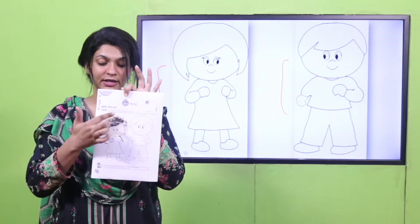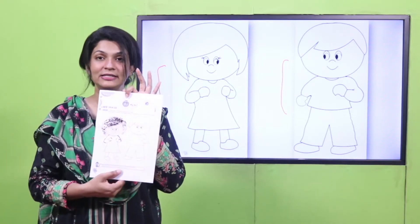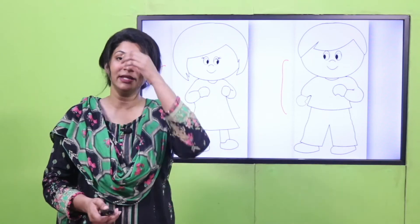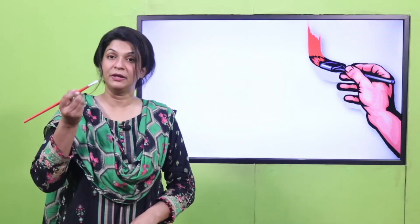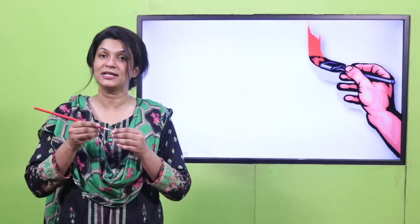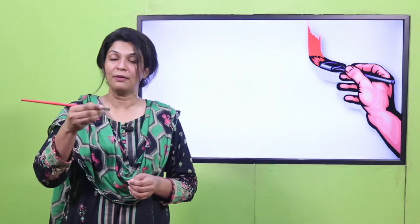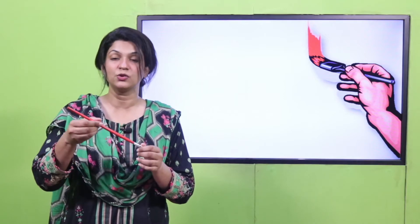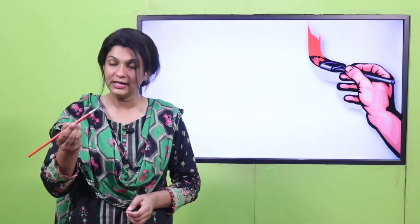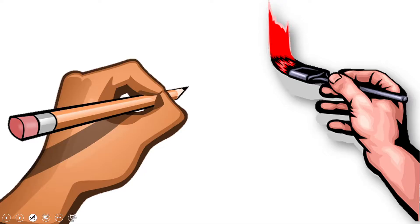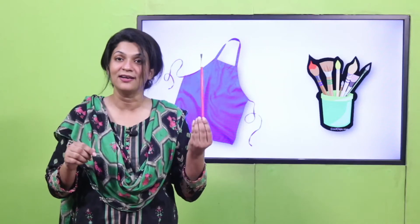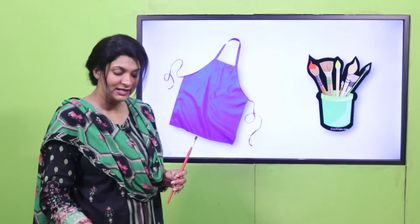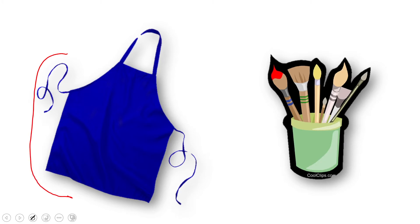لیکن اس سے پہلے یہ بتا دوں کہ آج جو ہم artwork کریں گے اس سے ہماری writing skills اچھی ہونے والی ہیں۔ جب ہم crayon, color pencils یا paint brushes پکڑیں گے تو ہاتھوں کی grip بہت اچھی ہو جائے گی۔ آپ paint brush کو بالکل اسی طرح hold کیجئے جیسے pencil hold کرتے ہیں، لیکن brush کو edge سے نہیں بلکہ تھوڑا اوپر سے پکڑیے۔ آپ کو کئی brushes اور ایک apron کی بھی ضرورت پڑے گی۔